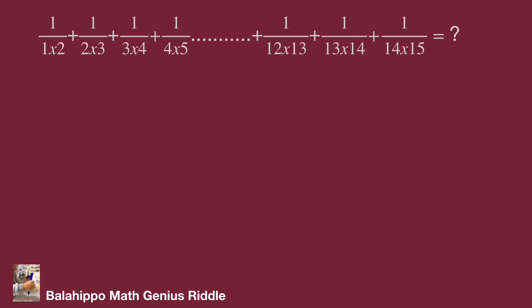Next step, 1 over 1 times 2 becomes 1 minus 1 over 2, 1 over 2 times 3 equal to 1 over 2 minus 1 over 3.